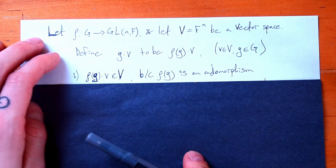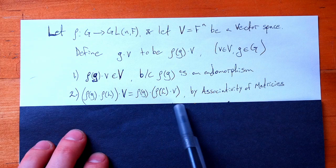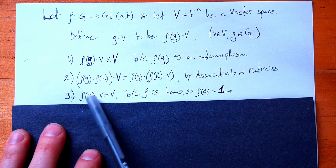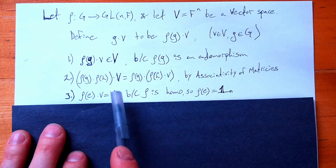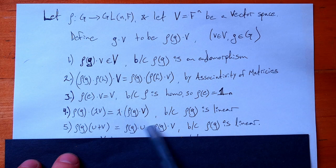The next property comes from the associativity of matrices: we have a matrix times a matrix times a vector, and we can associate the brackets however we see fit. For the identity property, since ρ is a homomorphism, it maps the identity to the identity matrix, and the identity matrix times any vector gives back that vector. For linearity, we can pull scalars out because our matrices are linear, and the product of a sum is the sum of the products because matrix multiplication is linear. So V becomes an FG module when we define our multiplication this way.